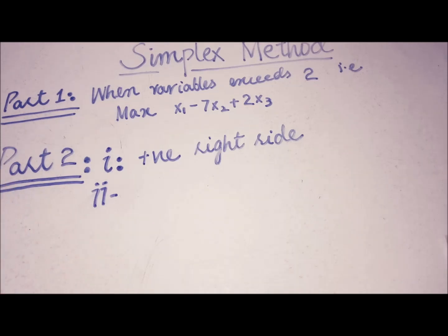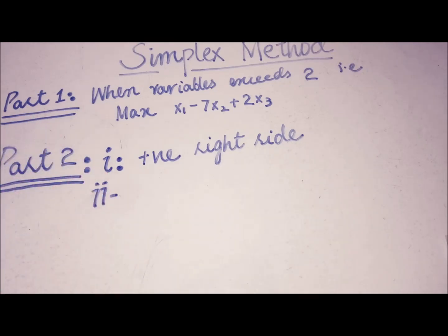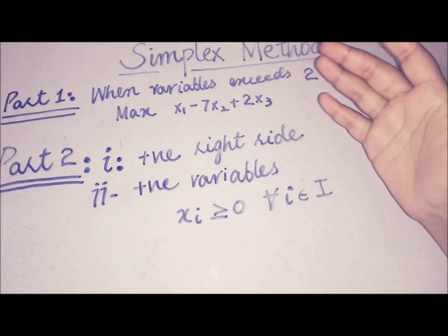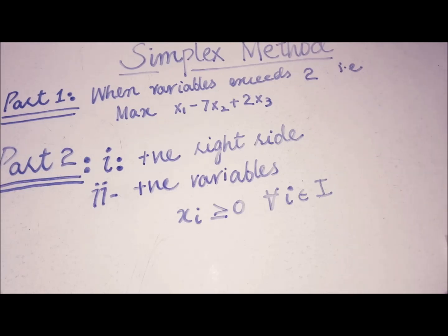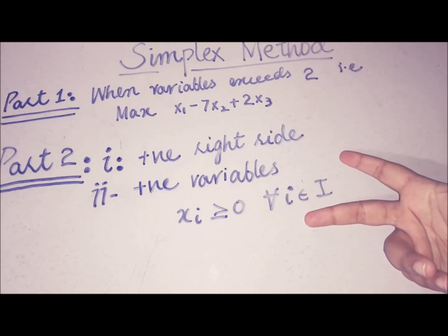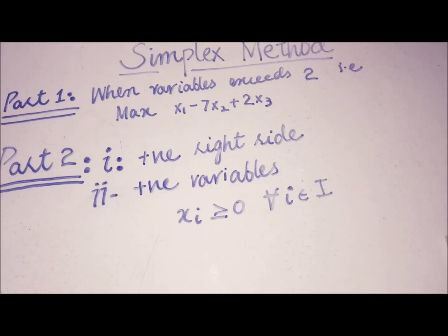The second condition is that all variables must be non-negative. This is the same requirement as in the graphical technique, and it reflects real life — there is no meaning to negative length, negative time, or a negative number of products. So to summarize the model: the right-hand sides must all be positive, and all variables must be non-negative.